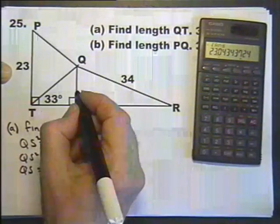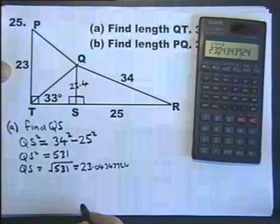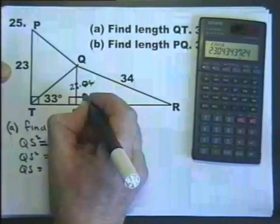So I'm actually going to use that, so I'll leave that in the window. So, we now know what this is. I'll write 23.04 as a shortened version.